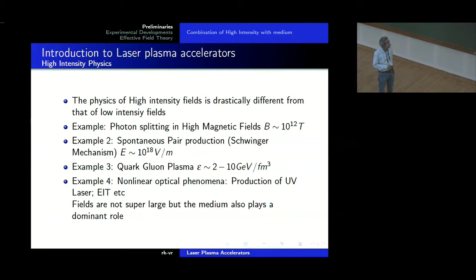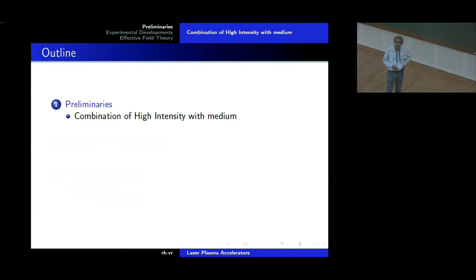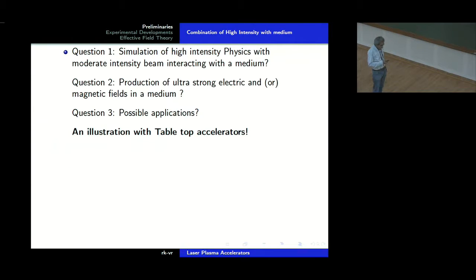So, what we want to do is to look at laser plasma interaction also from that perspective — to have a combination of high intensity with medium. Whereas in quantum field theory, for example when you look at the production mechanism of quarks and gluons in QGP, there is no medium. You have to invoke very complicated non-perturbative phenomena because of which quarks and gluons will be produced. But here we have a medium and we should exploit that.